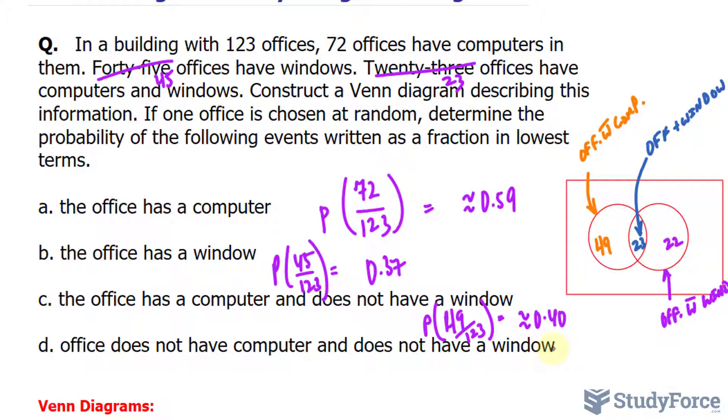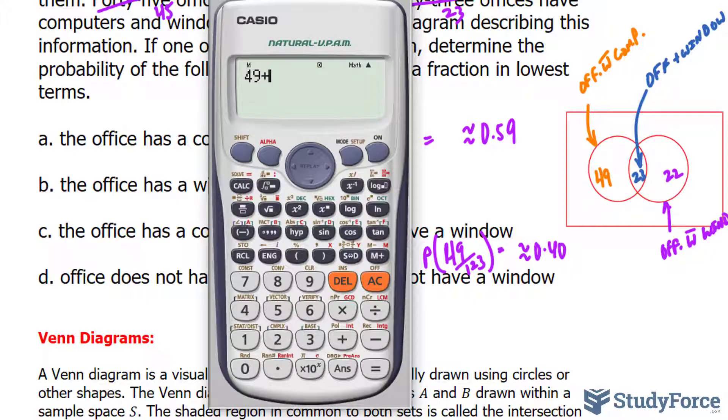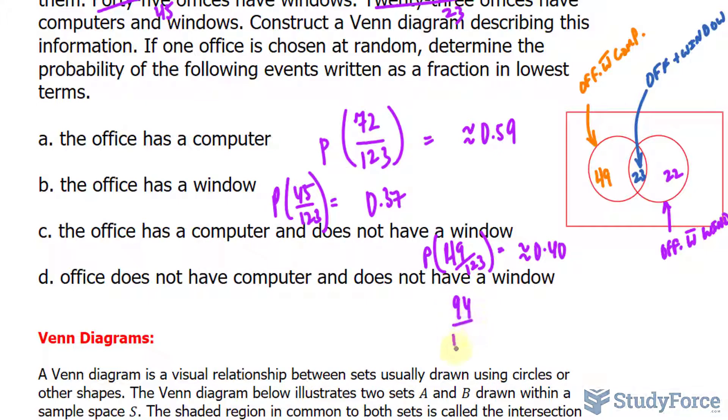And lastly, the office does not have a computer and does not have a window. To find out the answer to this, we will add 49, 23, and 22. So 49 plus 23 plus 22 equals 94. 94 over 123.